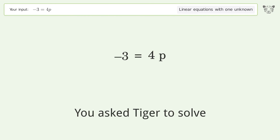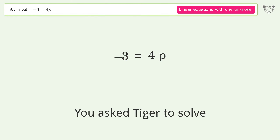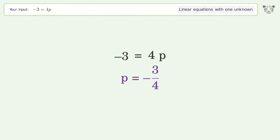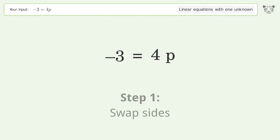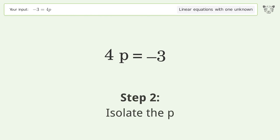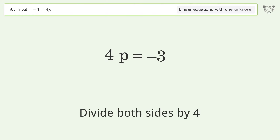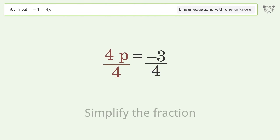You asked Tiger to solve this — it deals with linear equations with one unknown. The final result is p equals negative 3 over 4. Let's solve it step by step: swap sides, isolate the p, divide both sides by 4, simplify.